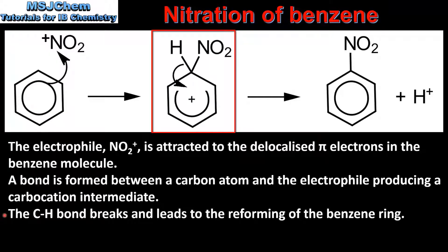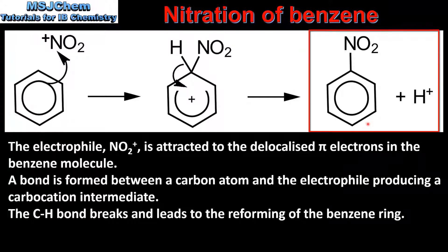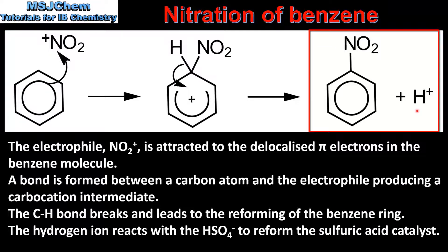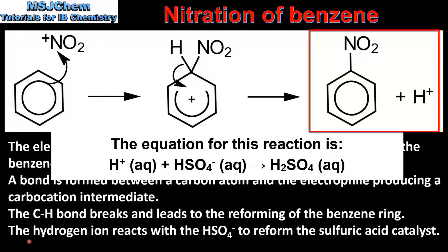Next, the carbon-to-hydrogen bond breaks and leads to the reforming of the benzene ring. A curly arrow shows a movement of a pair of electrons from the carbon-to-hydrogen bond back to the benzene molecule, reforming the delocalized pi system. The product is nitrobenzene, along with a hydrogen ion. The hydrogen ion then reacts with the hydrogen sulfate ion to reform the sulfuric acid catalyst.